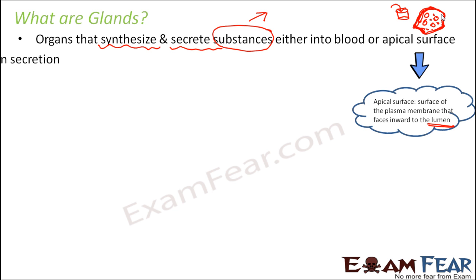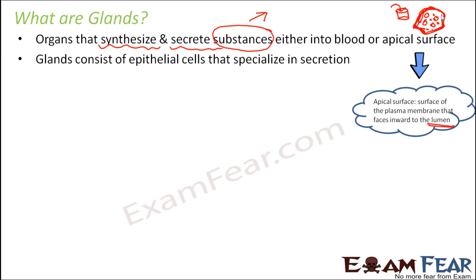Now, what are glands made up of? Glands consist of epithelial cells that specialize in secretion. We discussed about all the different types of tissues — epithelial tissue, muscular tissue, connective tissue, nervous tissue — and the various types of epithelial cells like ciliated epithelium, cuboidal epithelium, squamous epithelium, and columnar epithelium. Not every epithelium specializes in secretion; there are certain types of epithelial cells which are better at secreting substances.